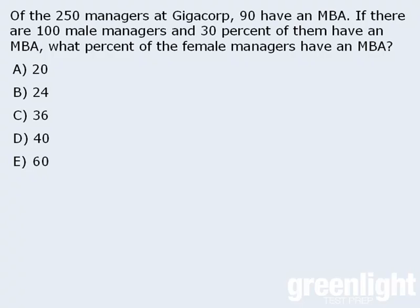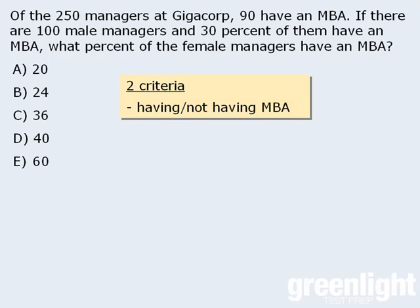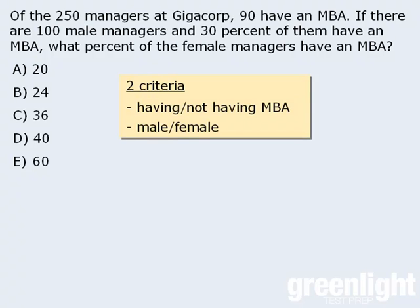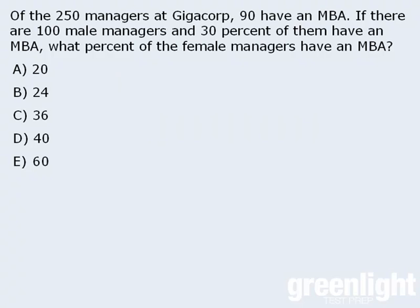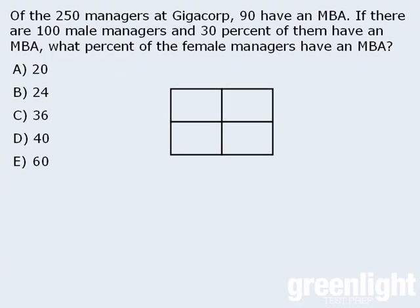Notice that we have a population of managers here, and there are two criteria associated with each manager: having or not having an MBA, and being male or female. As such, we can solve this question using the double matrix method.